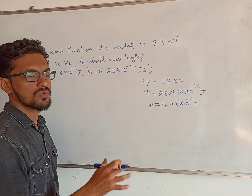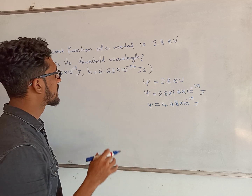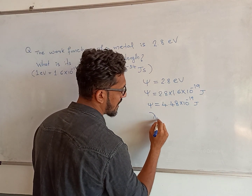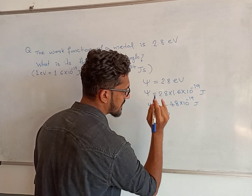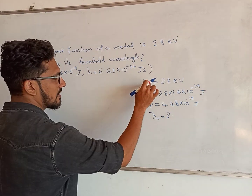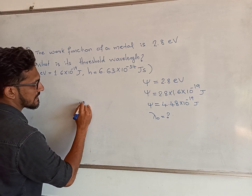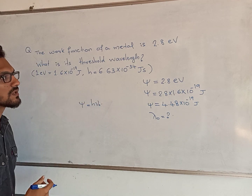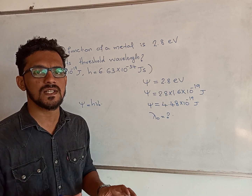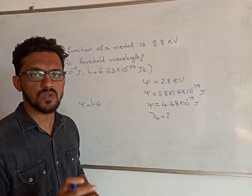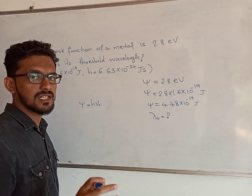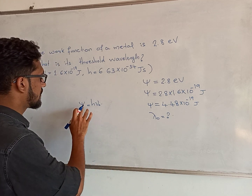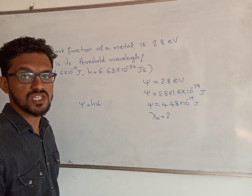So we have 4.48 into 10 raised to minus 19 joules. The threshold wavelength is lambda 0. The work function equation uses the threshold frequency nu 0, which is the minimum frequency of incident light that can eject an electron. The work function equals h times nu 0.